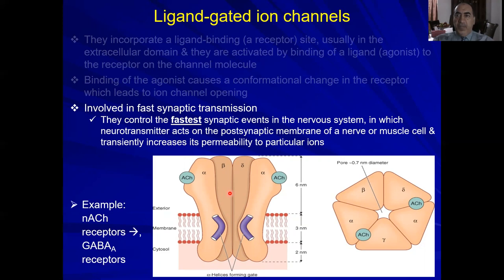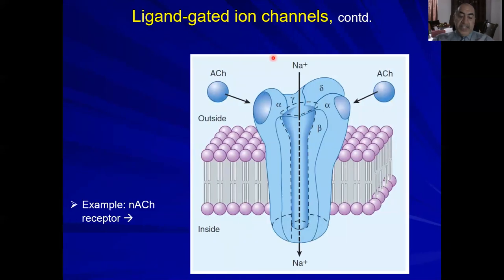A neurotransmitter like acetylcholine acts on a post-synaptic membrane containing the nicotinic acetylcholine receptor and transiently increases its permeability to particular ions. For the nicotinic acetylcholine receptor, it allows the passage of sodium. For GABA-A, it allows the passage of chloride. Acetylcholine binds to the binding site on the ligand-gated channel and allows the passage of sodium.